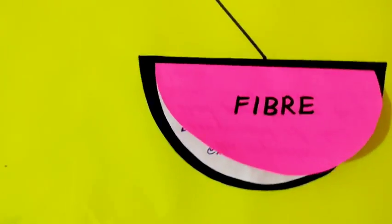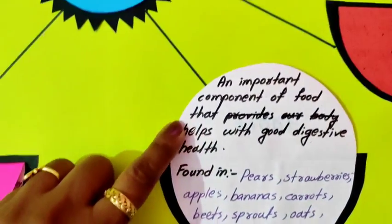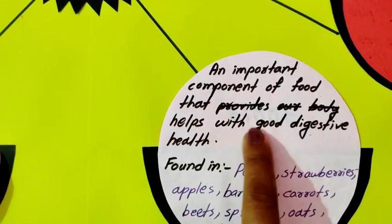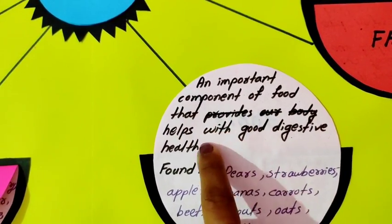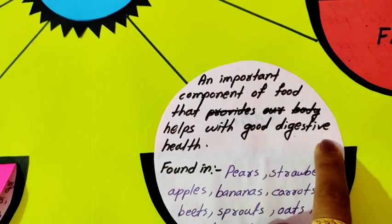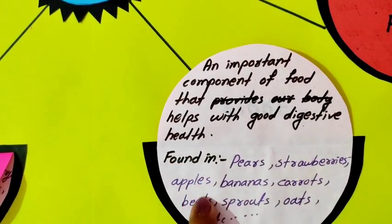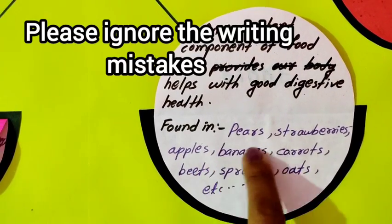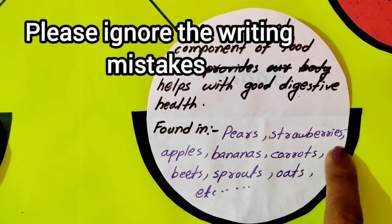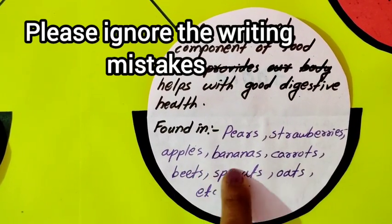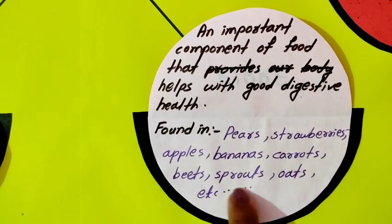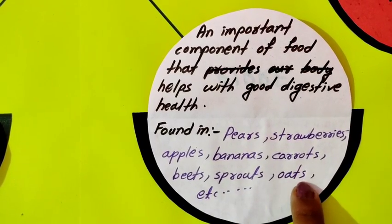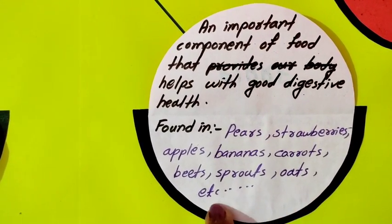Then fiber. This is an important component of food that helps with good digestive health. Found in pears, strawberries, apples, bananas, carrots, beets, sprouts, oats, etc.